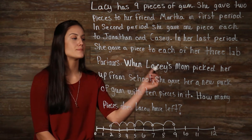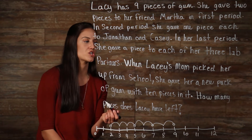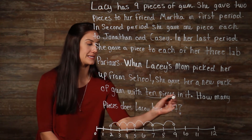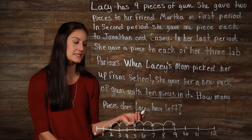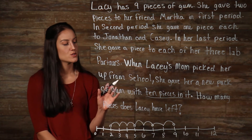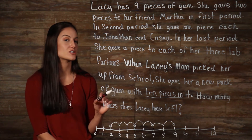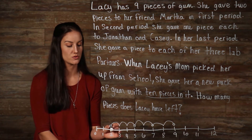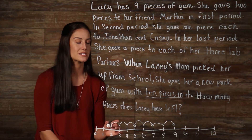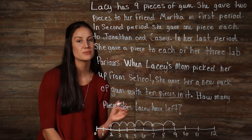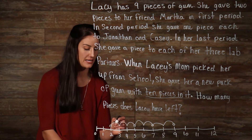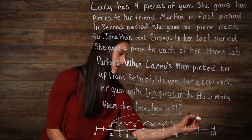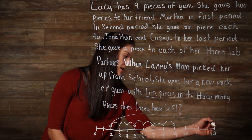When Lacey's mom picked her up from school, she gave her a new pack of gum with ten pieces in it. So her mom gave her ten new pieces — we're adding ten on to the two that we have right here. So we need to go to the right ten places on our number line, and that's going to put us all the way over here at twelve.